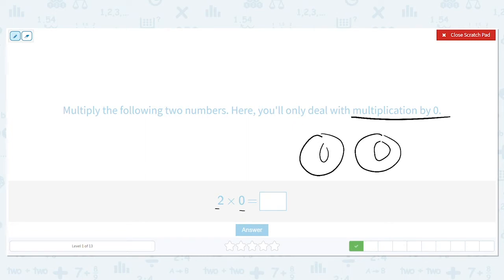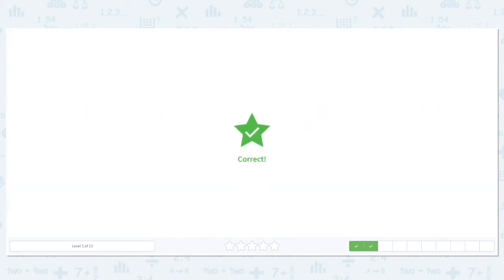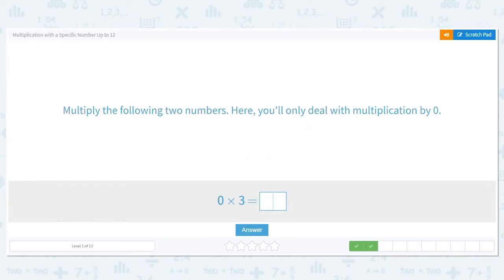I have zero in both groups, so how many total items do I have? Zero.